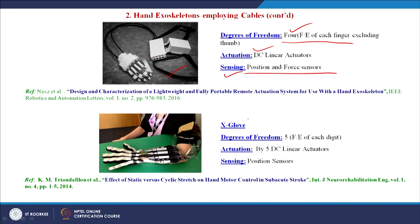The X-Glove, proposed by Kirsten M. Triandafilou, has 5 degrees of freedom — each digit has combined flexion-extension. Actuation is done by 5 DC linear actuators, one for each digit as shown in the schematic, and position sensors are used for sensing. Strenuous research work has been done by Professor Kamper regarding control of this exoskeleton for stroke patients.